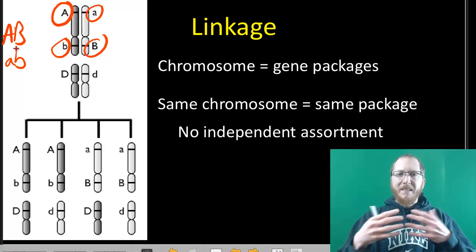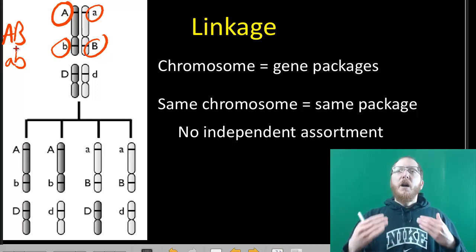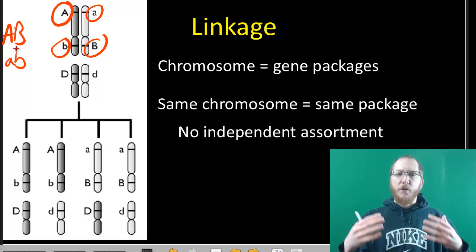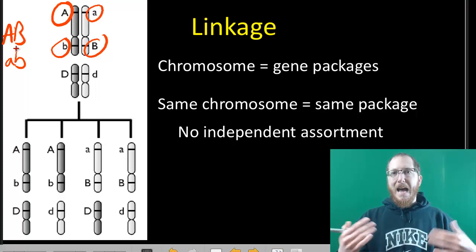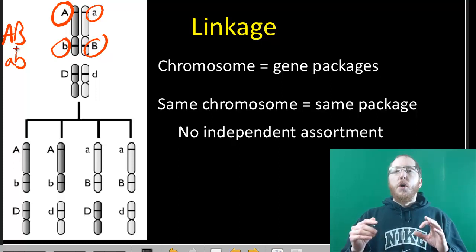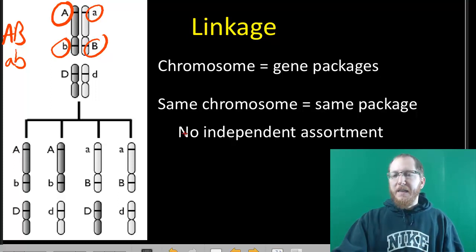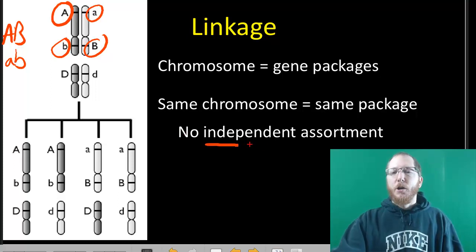These are what we call recombinants, where you mix things up. And so because we don't see those individuals at the ratios we're supposed to, like that 9 to 3 to 3 to 1, we can figure out something's going on and independent assortment is not occurring.